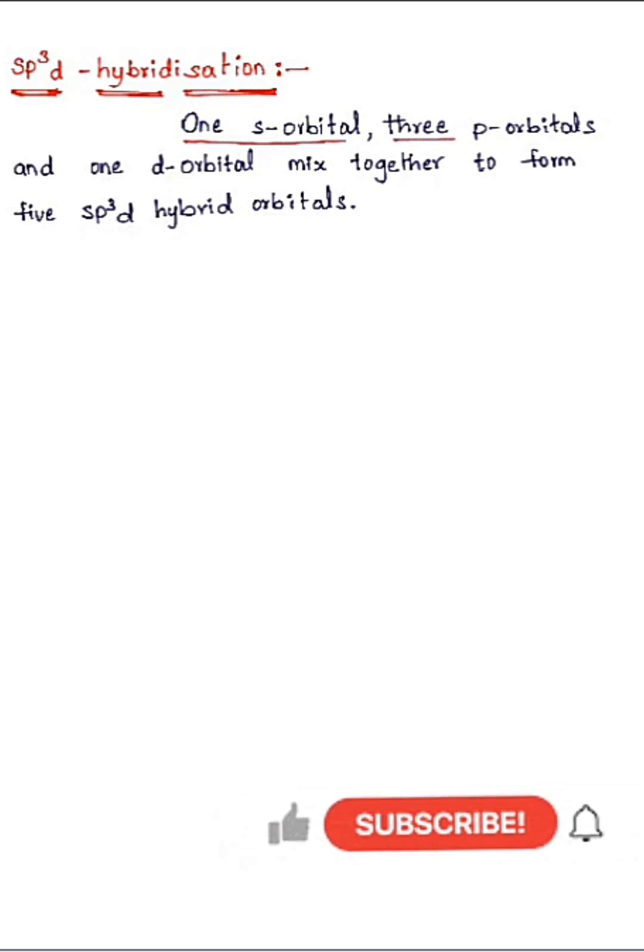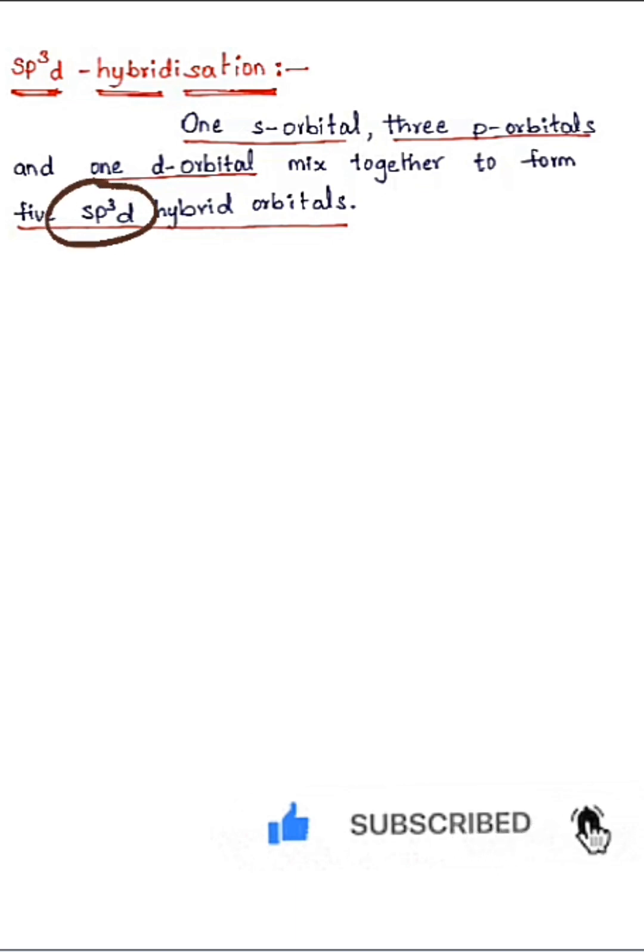One s orbital, three p orbitals, and one d orbital mix together or combine together to form five sp3d hybrid orbitals. This is called sp3d hybridization. That means in this sp3d hybridization, in this mixture of atomic orbitals, one s orbital, three p orbitals, and one d orbital are present. So totally five orbitals are present in sp3d hybridization.